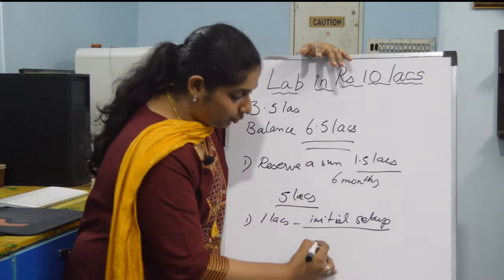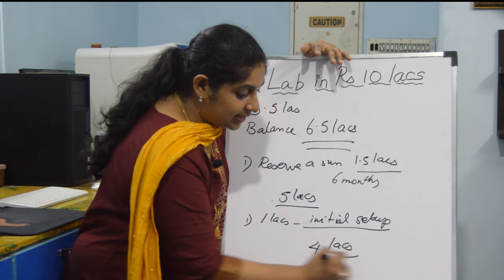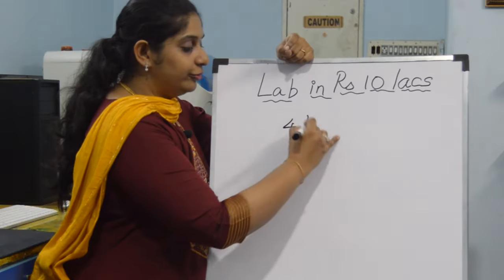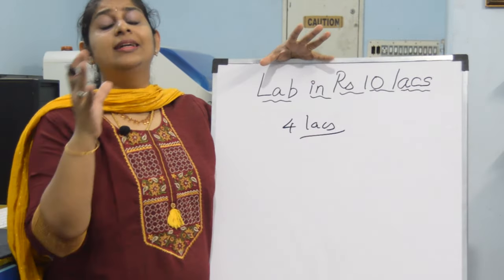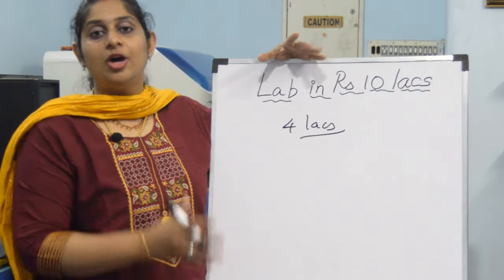All this done, you would be having 4 lakhs in hand for investment into machine. Now you have 4 lakhs in hand for the machine investment. So what are the types of machine you can install in this 4 lakhs?